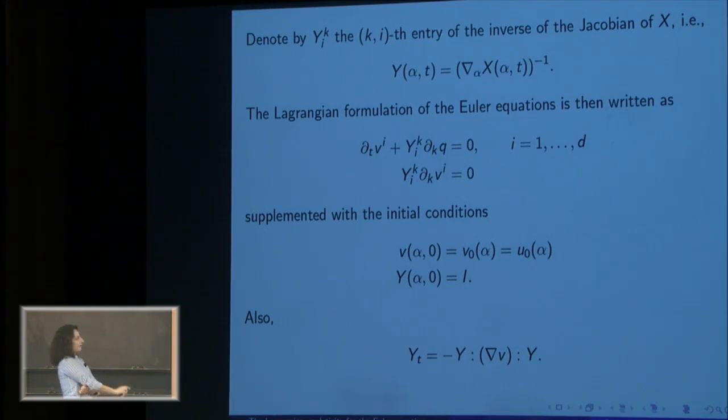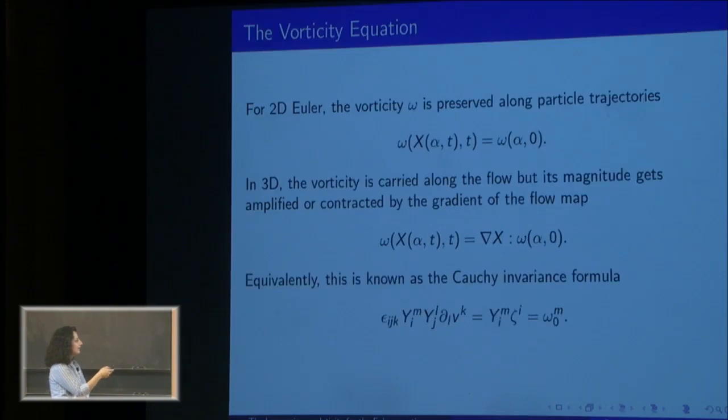One of the key identities in the Lagrangian formulation is the equation satisfied by the matrix Y. Here, the semicolon represents matrix multiplication. Another key identity that we really like to have is the vorticity equation.